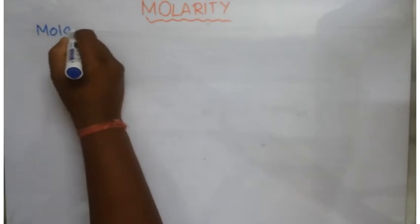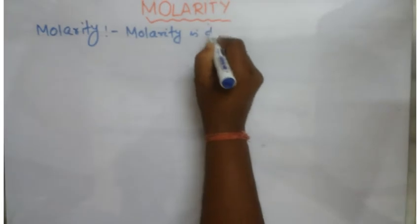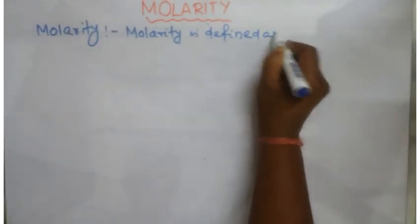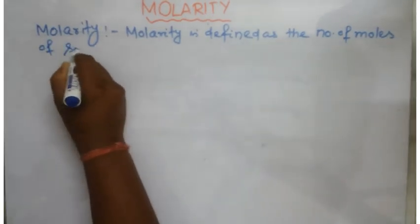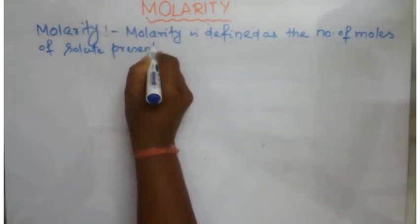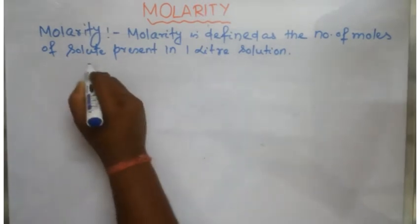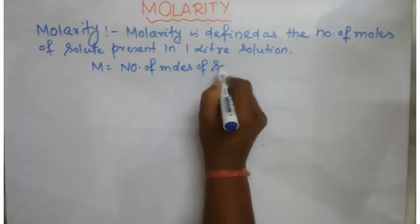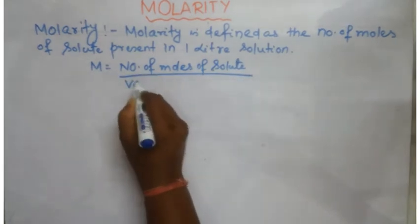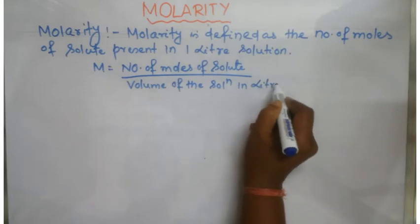This is the Molarity. Molarity is defined as the number of moles of solute present in one liter of solution. Mathematically it can be written as M is equal to number of moles of solute upon volume of the solution in liter. This is the mathematical expression for Molarity.